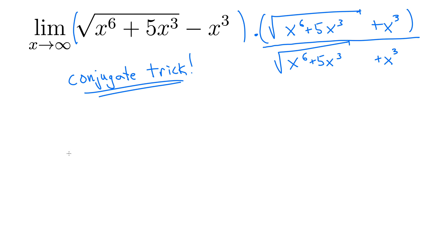So what does this give us? We still have our limit as x goes to infinity. We foil the top together so that radical times the radical gives us x to the 6 plus 5x cubed.